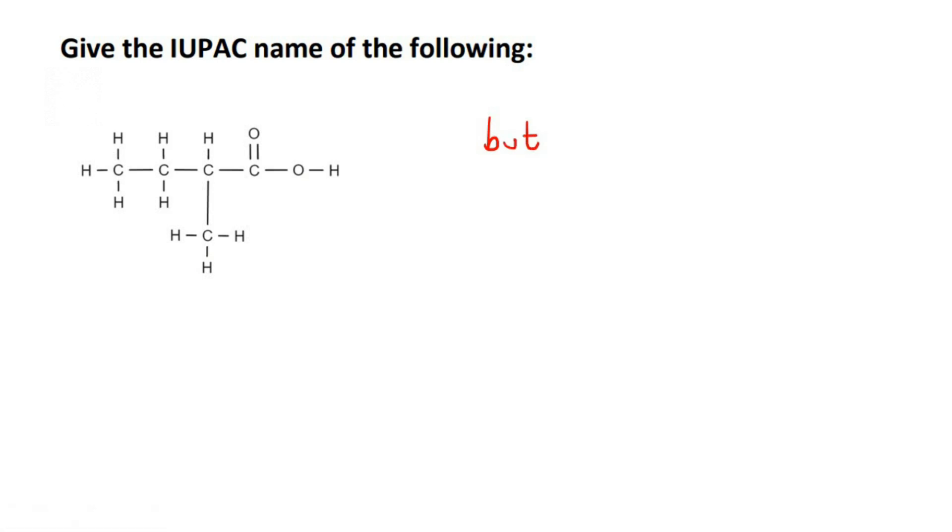Now if we start, this is the functional group. So you're going to start naming from the side that is closest to the functional group. So this is number one, number two, number three, and number four.